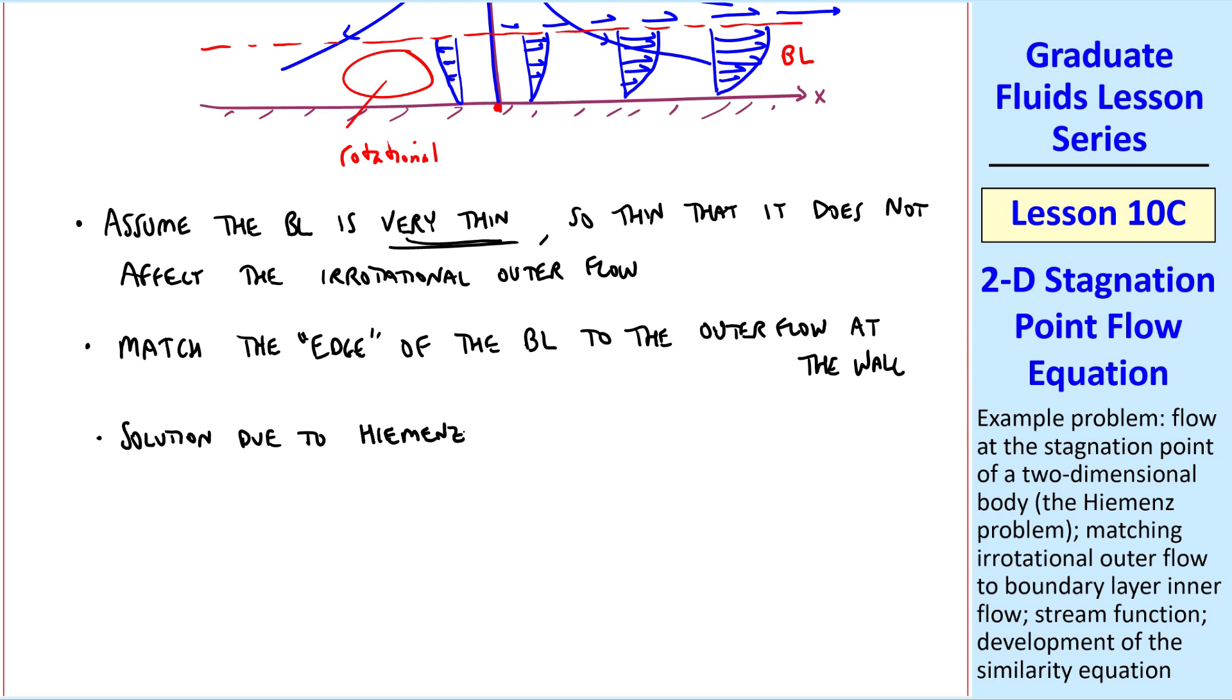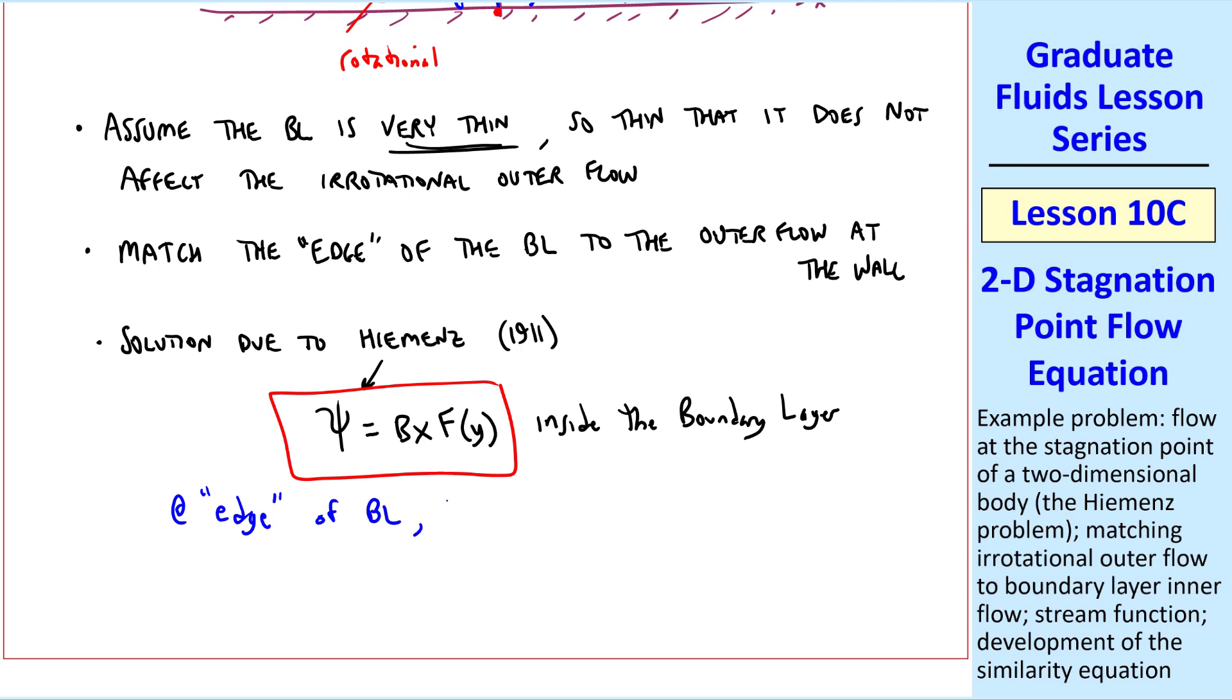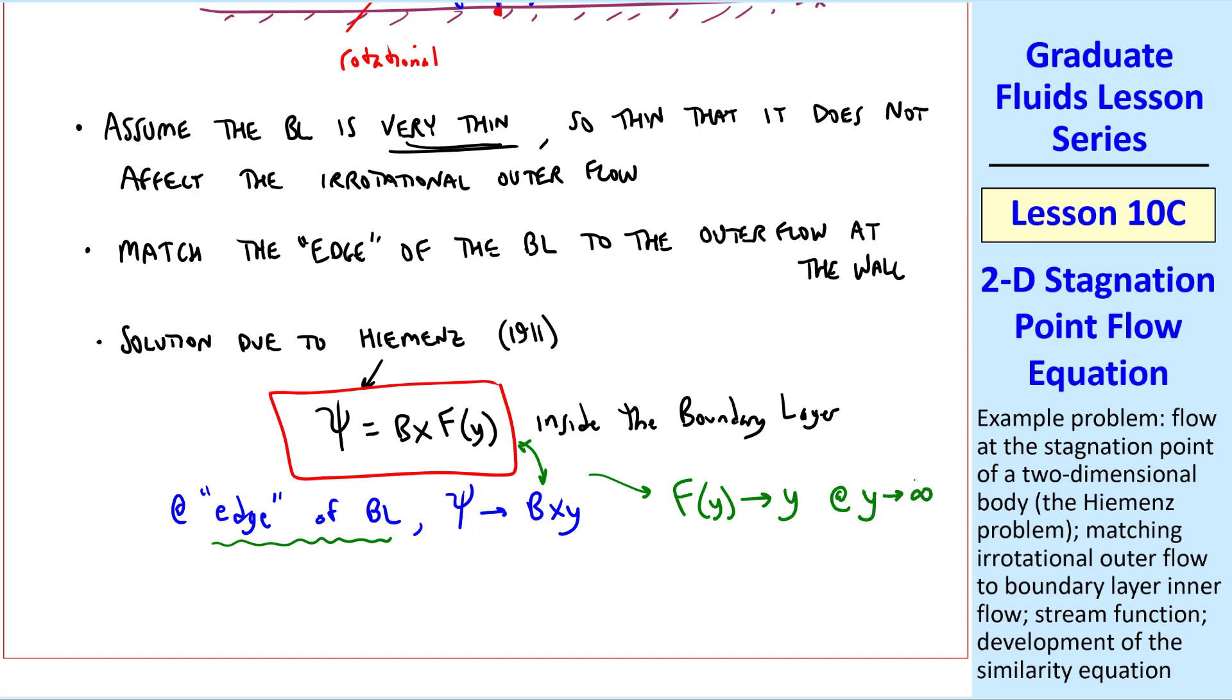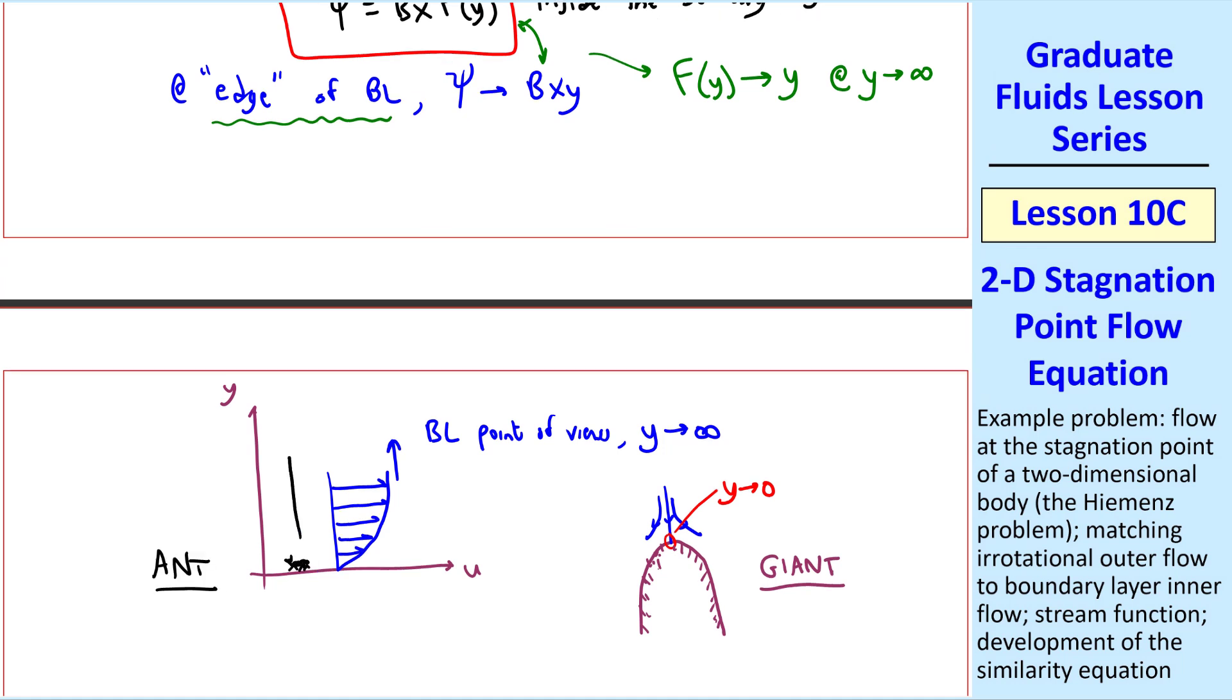And what we'll do is match the edge of the boundary layer to the outer flow at the wall. Well, as I mentioned, this solution was first done by Hiemenz way back in 1911, where Hiemenz let ψ = bx·f(y) inside the boundary layer. And then we must force this to match the outer flow. In other words, at the edge of the boundary layer, ψ must approach bxy. Equating these then, it's clear that f(y) must approach y at the edge or top of the boundary layer. But this is where it gets a little interesting. We'll say f(y) approaches y as y approaches infinity. This is kind of like the giant and the ant problem that we talked about before. From the boundary layer point of view, y goes to infinity. But from the giant's point of view, y goes to zero. In other words, the boundary layer is so thin that the giant doesn't even see it. But from the ant's point of view, the boundary layer is so high up there that the ant sees y going to infinity.